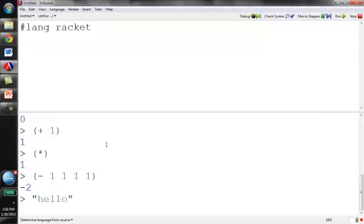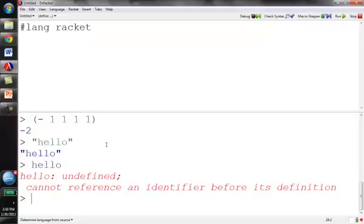So I have strings, but if I type in something without the quotes like that, I get an error message. It assumes then that it's a variable or an identifier as racket calls them, and it's not defined yet.